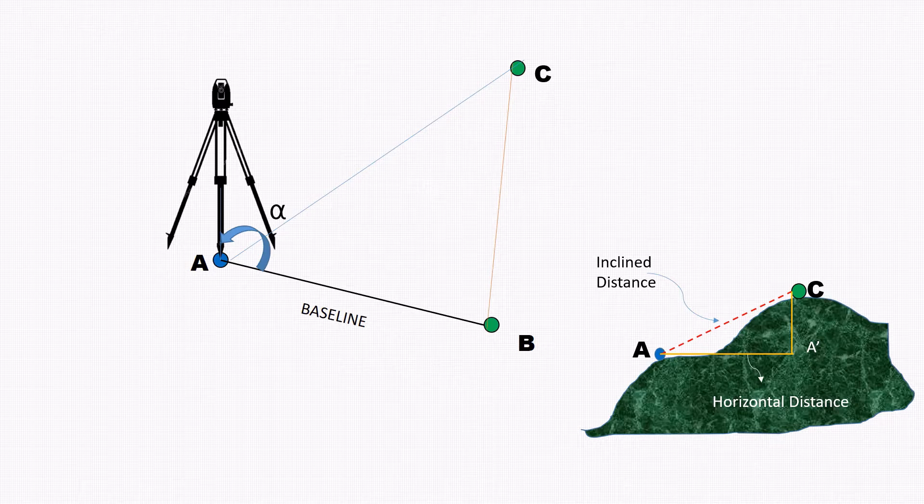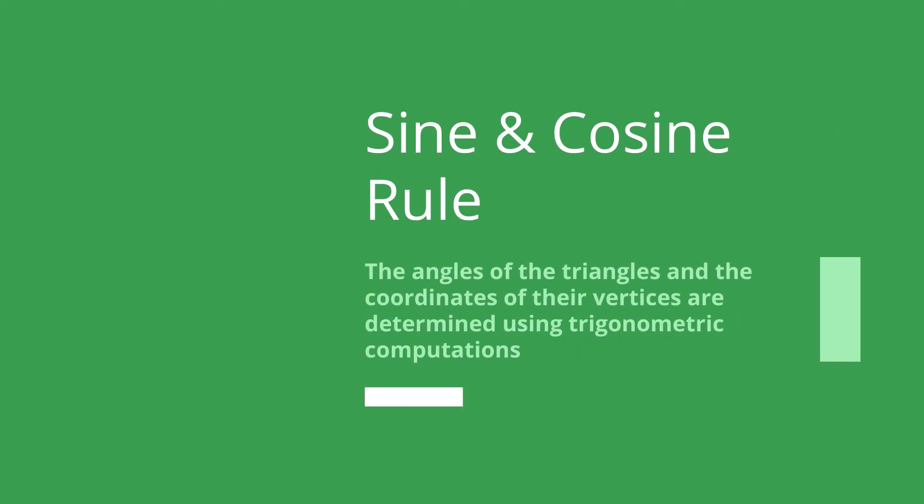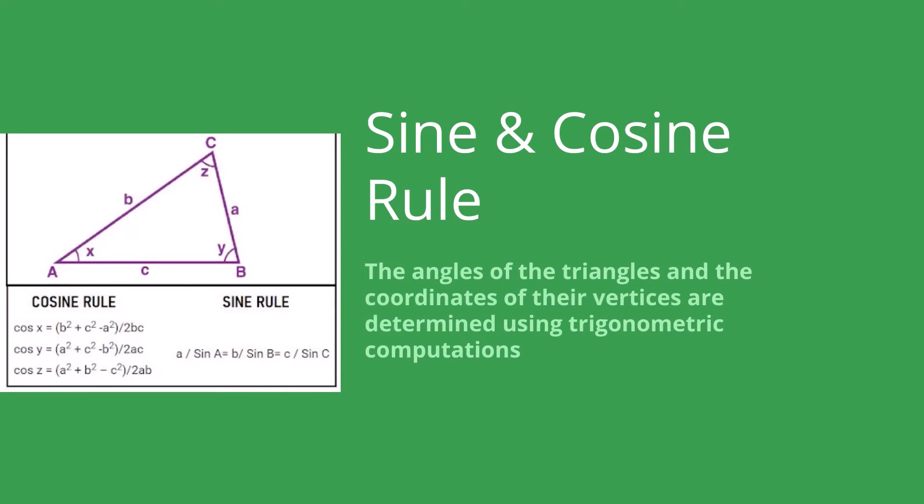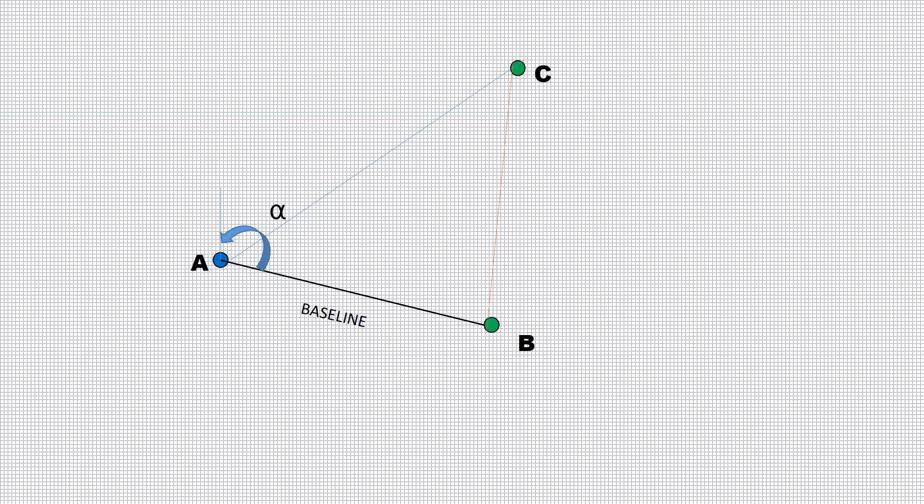After this, cosine rule is used to determine the interior angles of the triangle and the coordinates of C can be fixed. The accuracy of the fixed coordinate is checked by plotting triangle ABC and evaluating the error of closure.